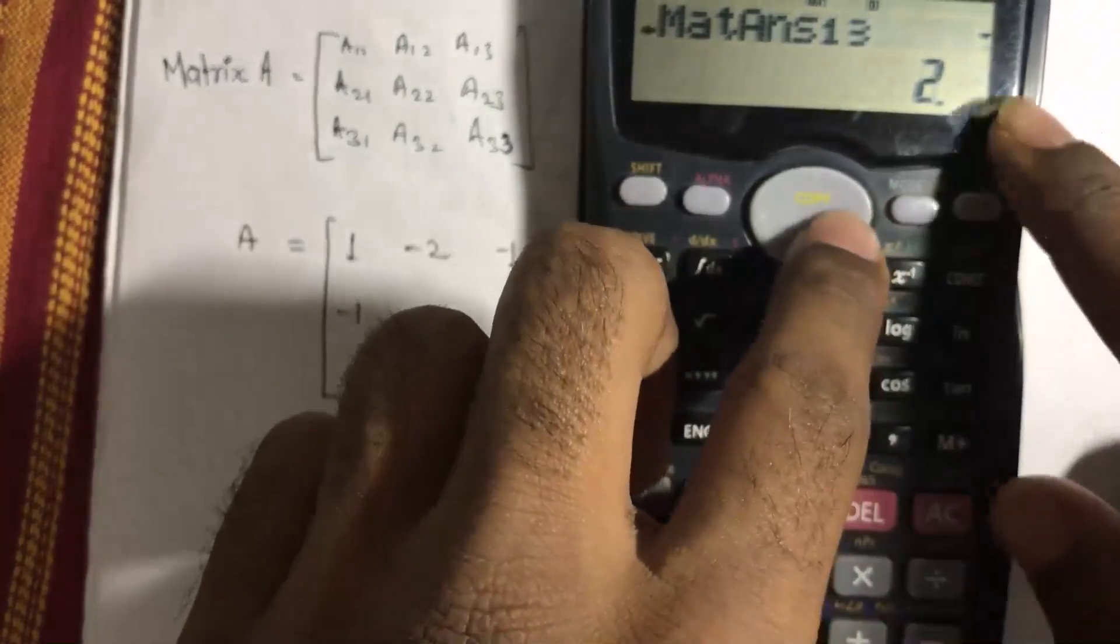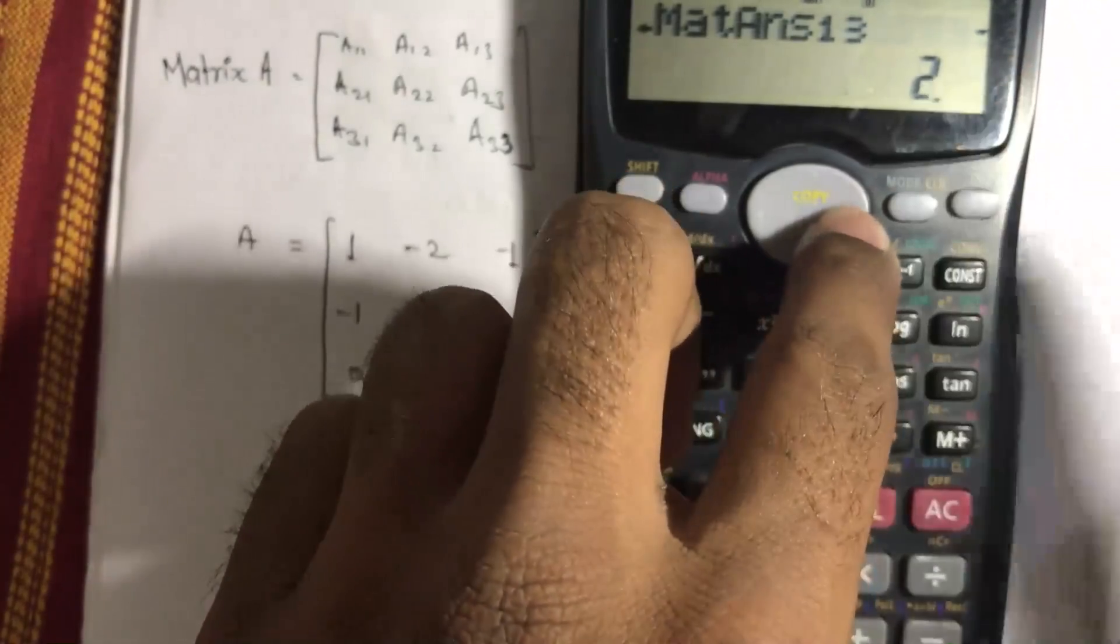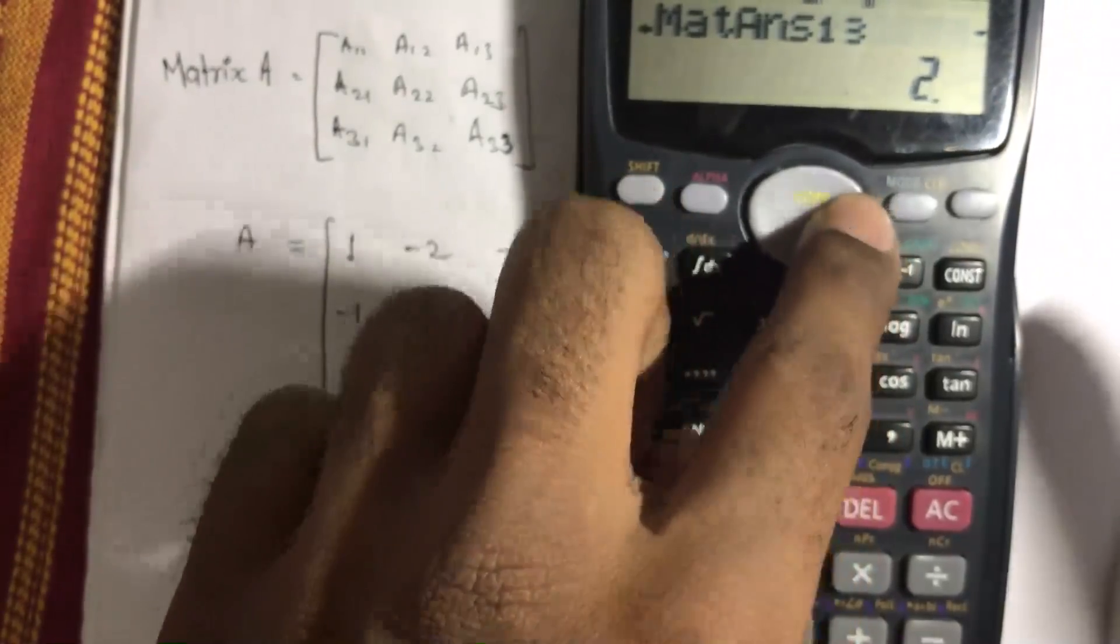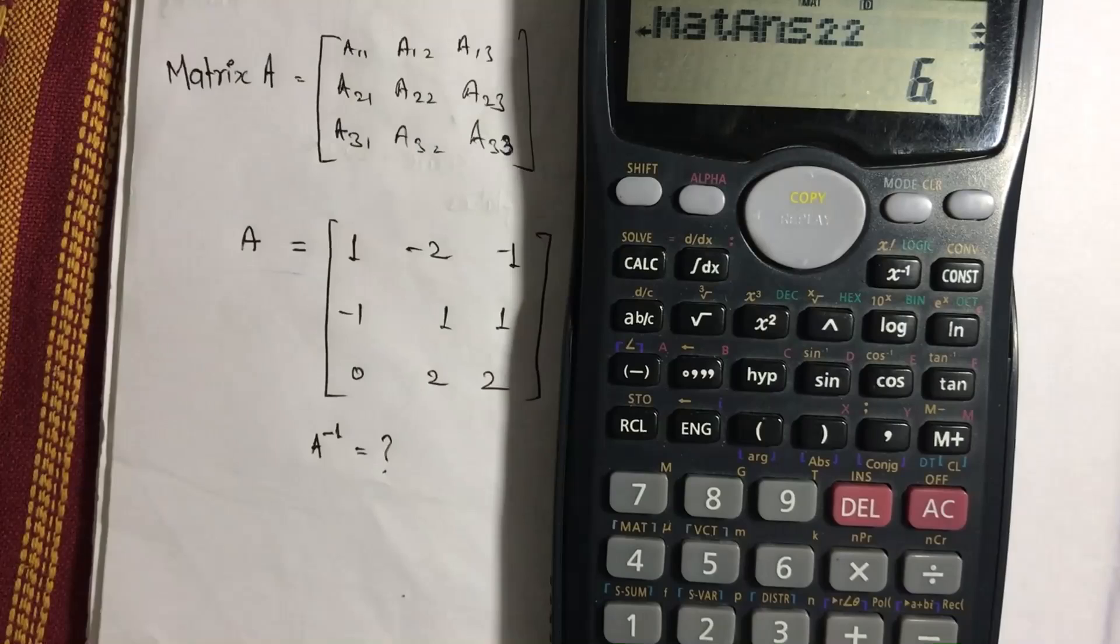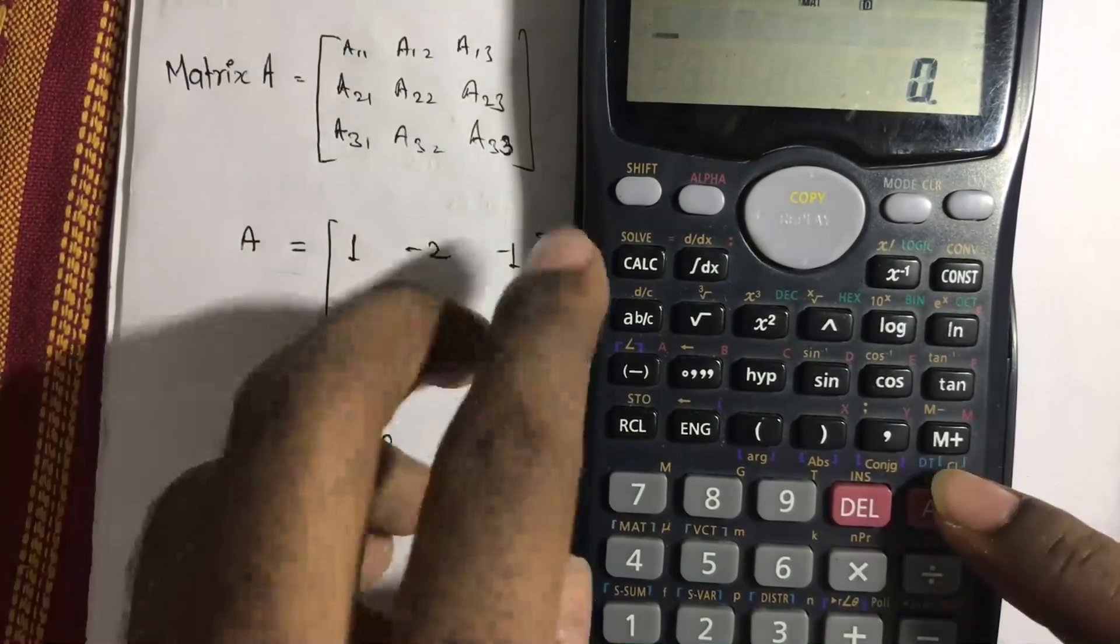You'll get values over here with the arrow so that we can get the different values of the matrix. So in this way, you can work in a calculator to get this addition, inverse, and all.